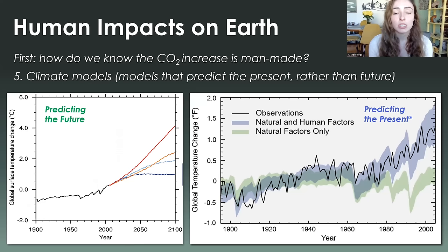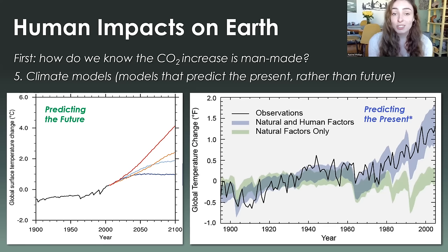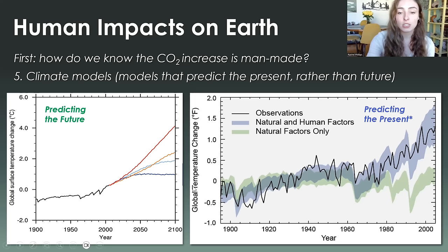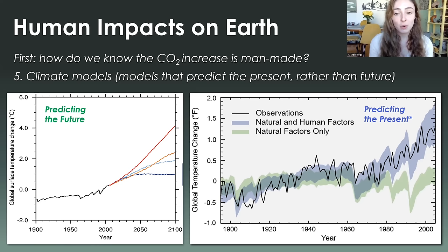The fifth and final reason we know the atmospheric carbon increase is due to us: we can run climate models. I'm not talking about predicting the future — I'm talking about models that predict the present. When we run models that only take into account natural carbon cycle effects, they don't match our current observations of temperatures and conditions on Earth. But when we add human factors — human input of carbon into the atmosphere — the observations and the model match. There is no model that can reach our present-day scenario without taking into account human factors.